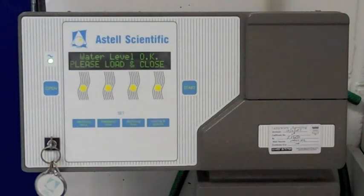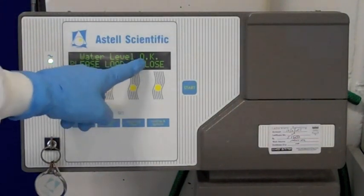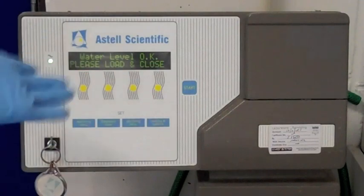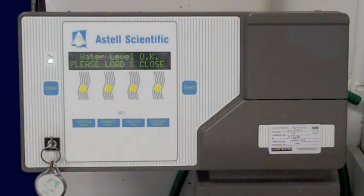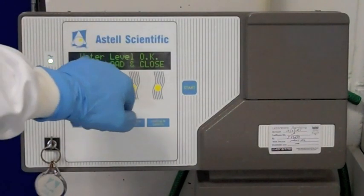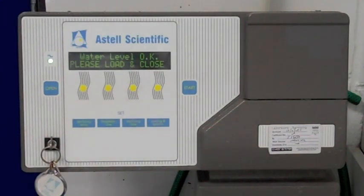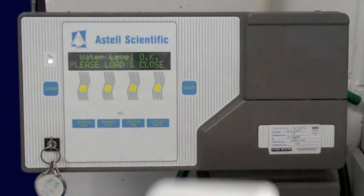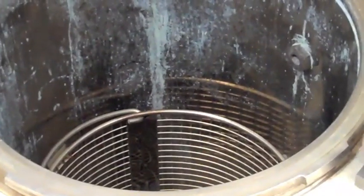You can see that at the moment the setting says water level okay, please load and close. That now means that the autoclave is actually ready for use. If the water level said water level low, you would simply add some tap water into the main bowl, into the main part of the autoclave, until the settings said water level okay.